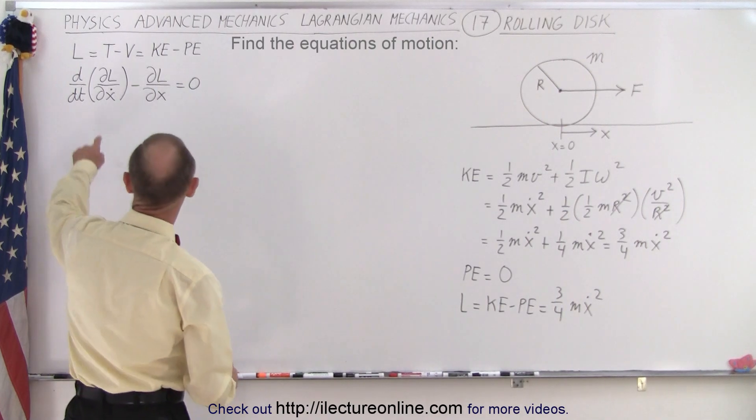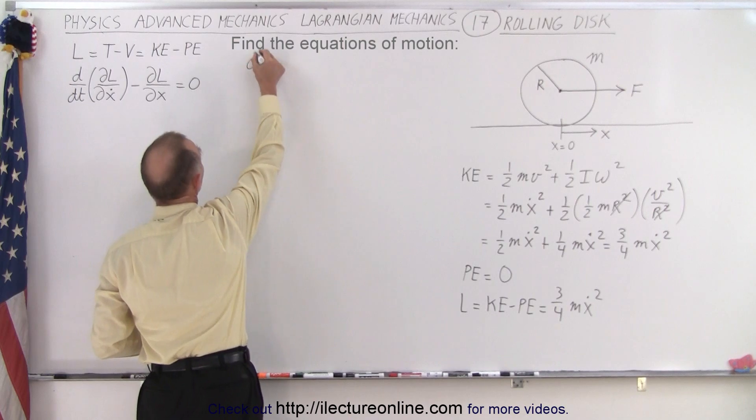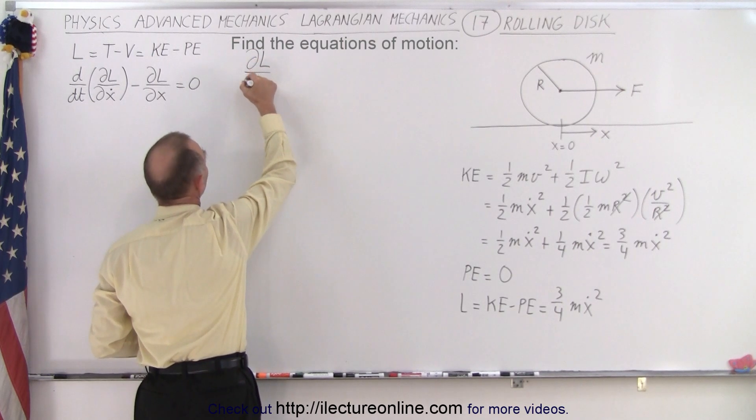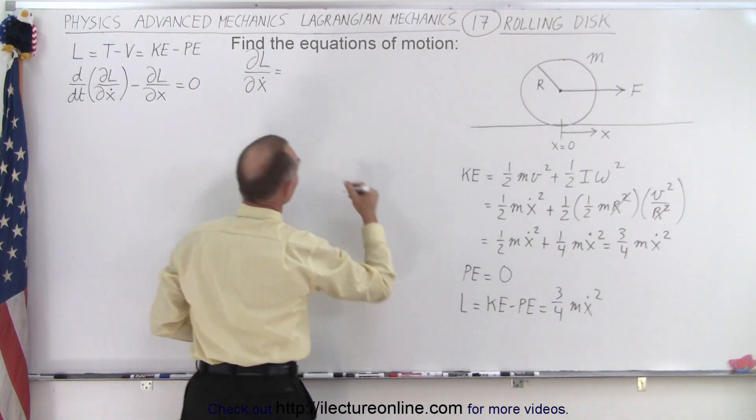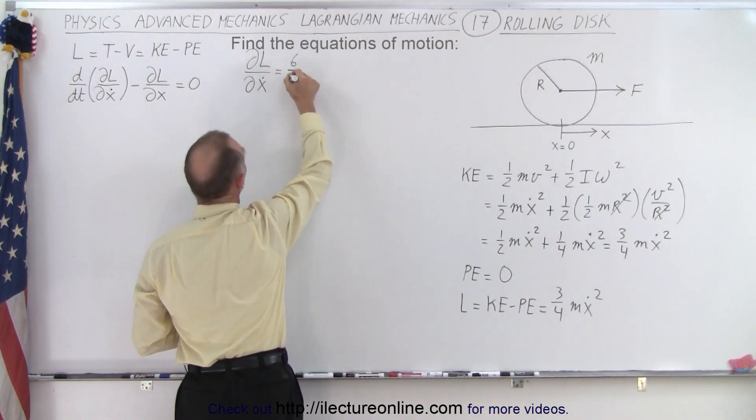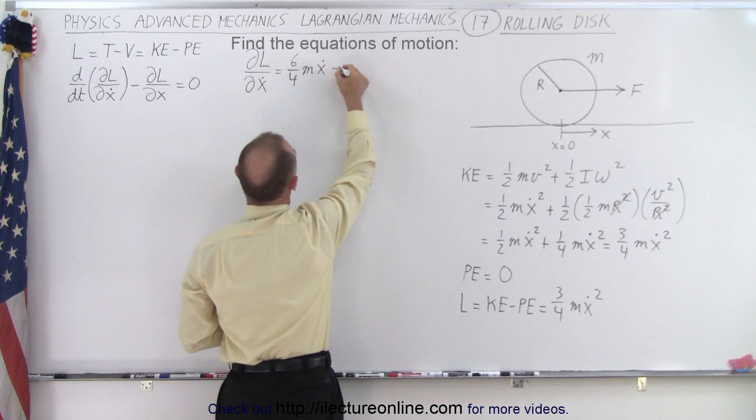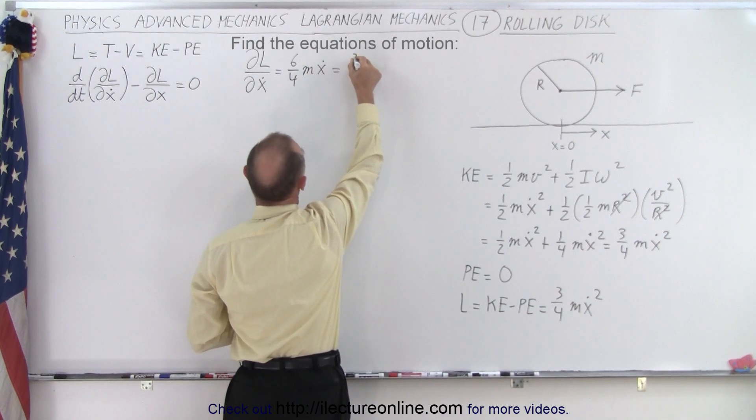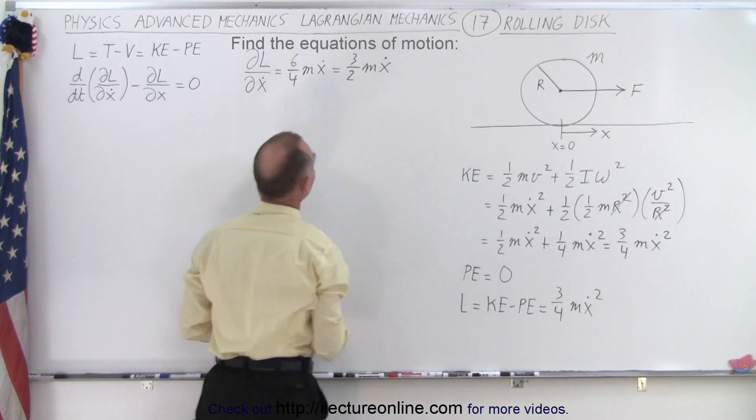Now we're ready to take the partial derivative with respect to x dot. So the partial derivative of L with respect to x dot is equal to, we take the two to the front, we get six over four, six over four M x dot to the first power, which of course simplifies to three-halves M x dot, like this.